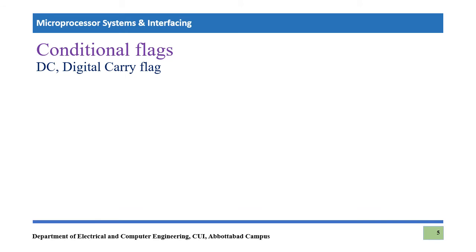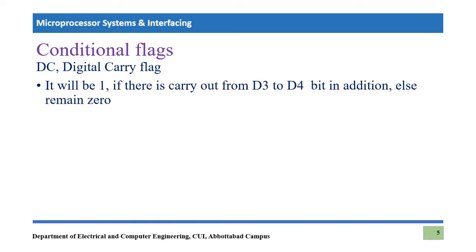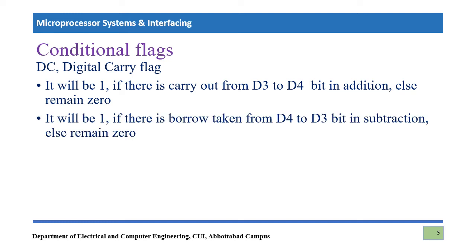The next flag is DC, or digital carry. It has almost the same kind of function as the carry flag, but with one key difference: the DC flag becomes 1 if there is a carry from D3 to D4 during addition; otherwise it becomes 0. So the difference is that carry flag considers D7, while DC flag considers D3.